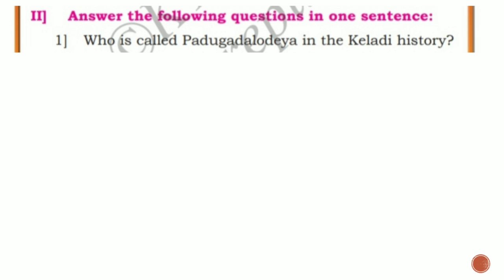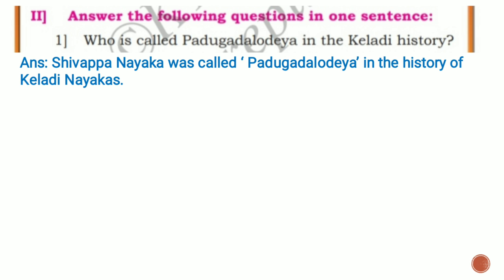Next, second main question: answer the following questions in one sentence. First question: who is called Padugada Lodeya in the Keladi history? Answer: Shivappanayaka was called Padugada Lodeya in the history of Keladi Nayakas.